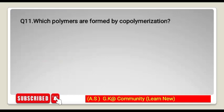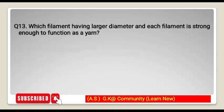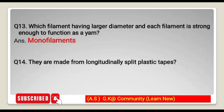Which polymers are formed by copolymerization? Mixed polymers are formed by copolymerization. Which fibers are made by cutting filament and are of short length? The answer is staple fiber. Which filament has a larger diameter and is strong enough to function as a yarn? The answer is monofilaments. What are made from longitudinally split plastic tapes? These are split fibers.